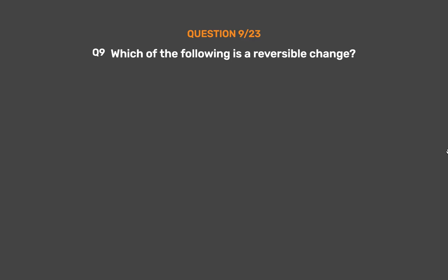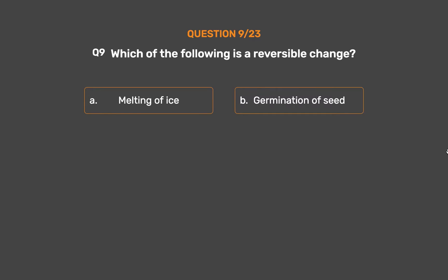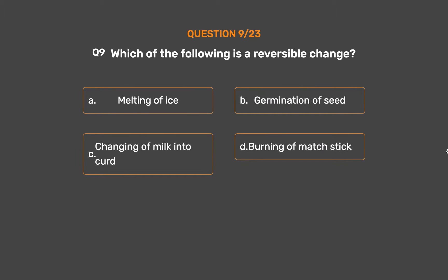Question number 9. Which of the following is a reversible change? Option A: Melting of ice. Option B: Germination of seed. Option C: Changing of milk into curd. Option D: Burning of matchstick.